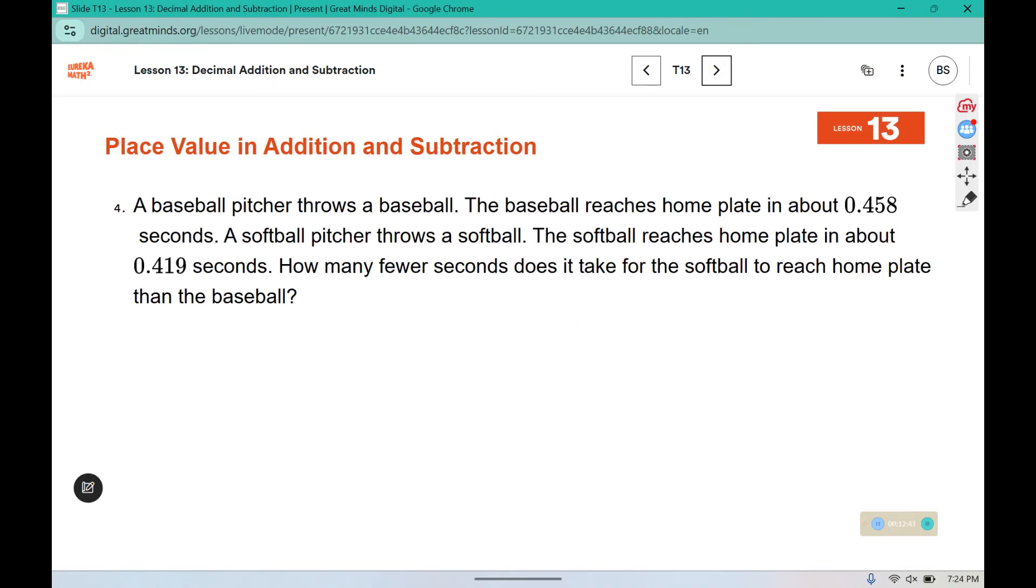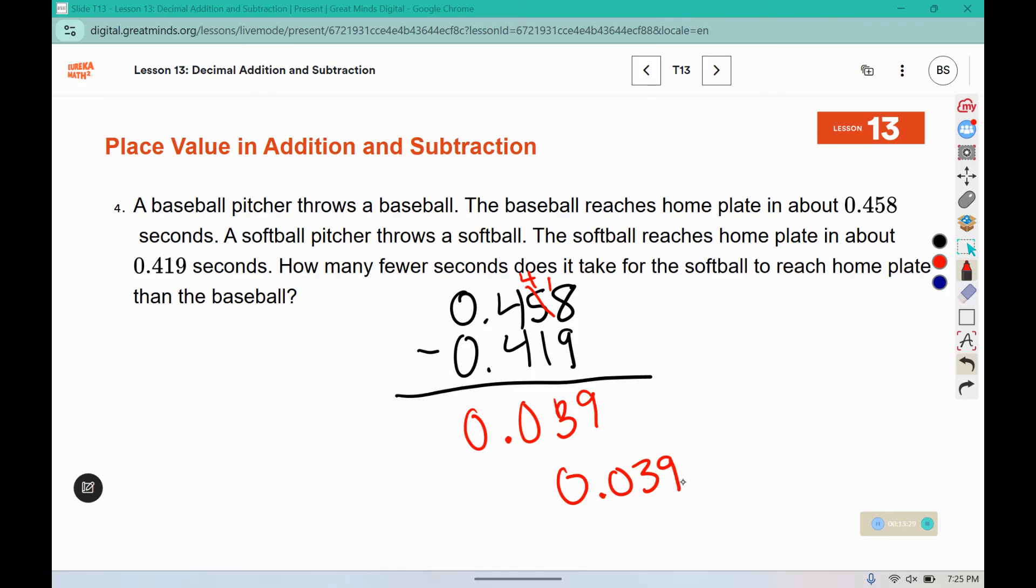A baseball pitcher throws a baseball. The baseball reaches home plate in about 0.458 seconds. A softball pitcher throws a softball. The softball reaches home plate in about 0.419 seconds. How many fewer seconds does it take the softball to reach home plate than the baseball? So fewer is a subtraction question. 458 minus 419. We will need to borrow or regroup. 18 minus 9 is 9. 4 minus 1 is 3. 4 minus 4 is 0. Don't forget to line up your decimal. So it is 0.039 seconds fewer.